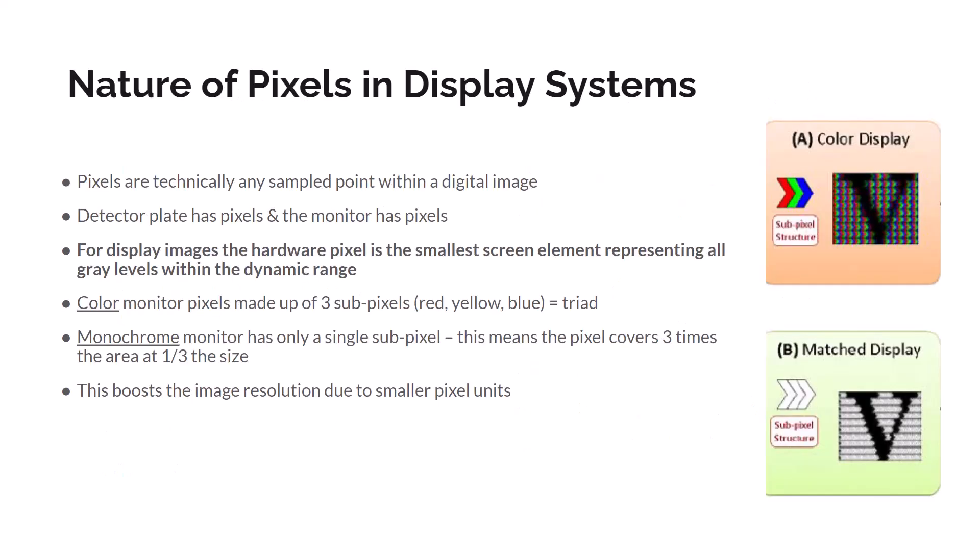When talking about the nature of pixels in the display, we compare color-based screens versus black and white screens, or monochrome. For radiology purposes, we don't need color to evaluate our images, so we use monochrome. Monochrome monitors have a single subpixel, which means it covers three times the area at one-third of the size — a huge advantage that improves image resolution because the pixels can be smaller. As seen in image B on the right, the letter V is easier to see and has higher resolution in the monochrome monitor compared to the color display.